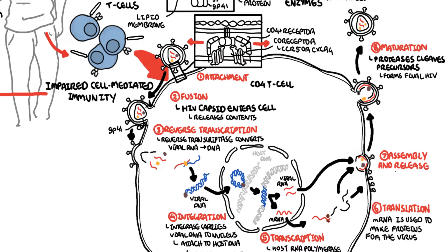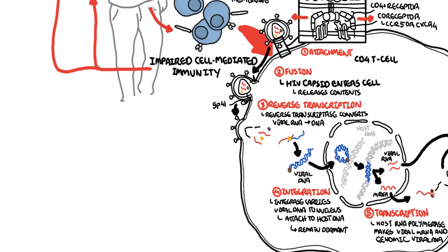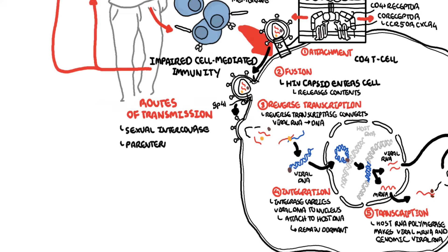The cycle can continue — this HIV virus can then infect other people or infect other cells. The route of transmission of the HIV virus is via sexual intercourse in the majority of cases. It can also be transmitted parenterally through the blood, or via vertical transmission from mother to baby.